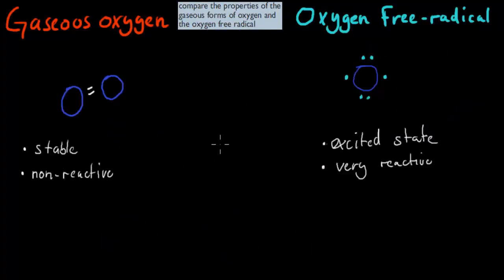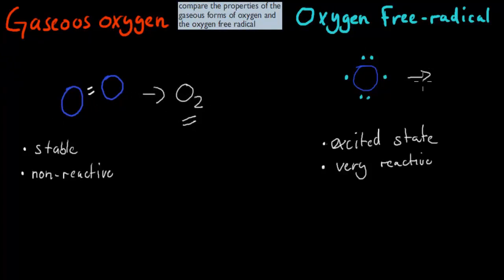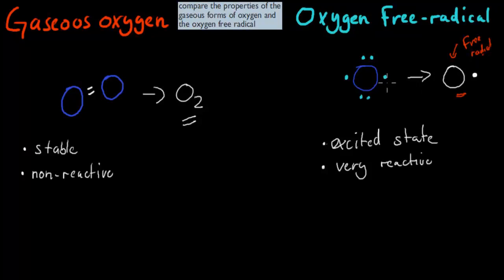This is a simple video. We talk about gaseous oxygen and the oxygen free radical, which is the same as O2. We represent the free radical in terms of its chemical formula as O with one dot — so if you see one dot like that, that's a free radical. This is the representation of a free radical oxygen: it's not bonded to anything, it has lone pair electrons, and we represent that with this dot, which is the free radical representation.